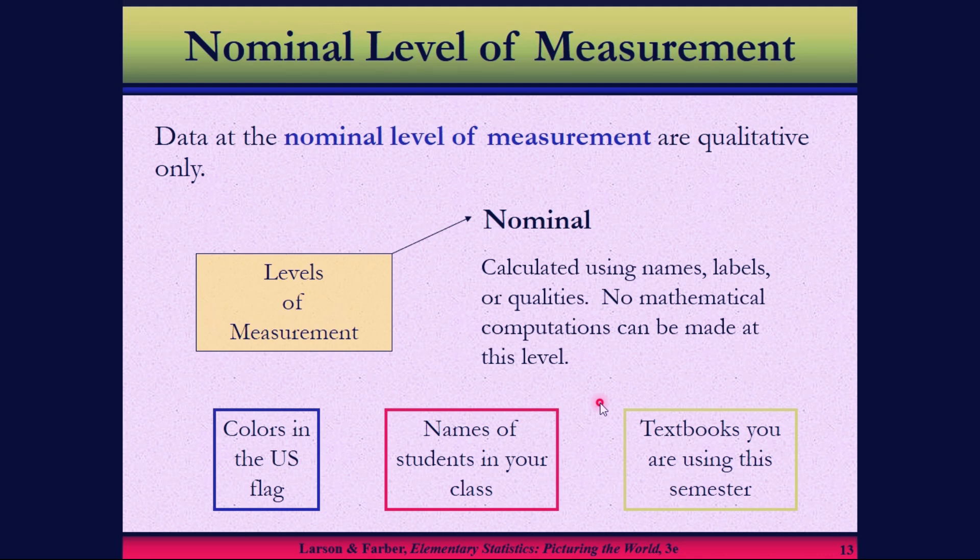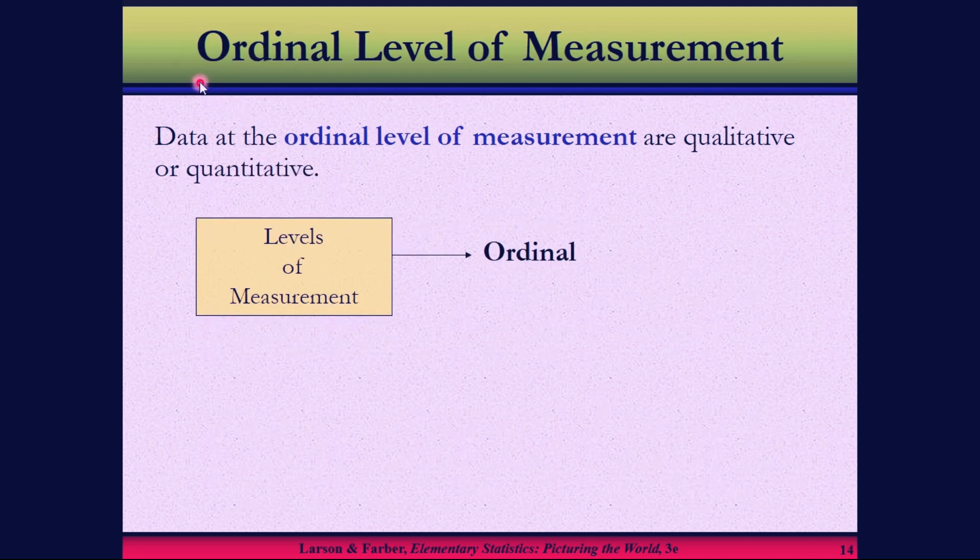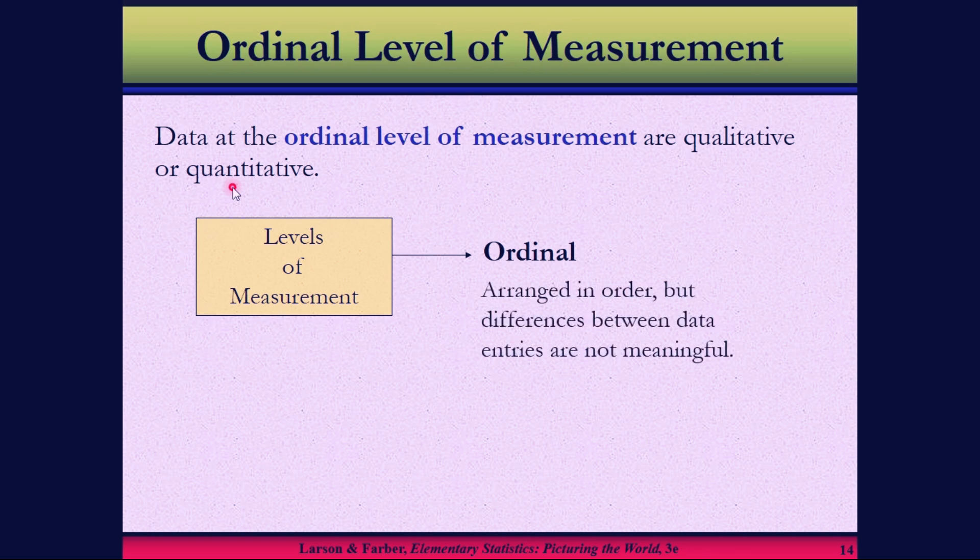The second type of level of measurement is ordinal. We define ordinal level of measurement as data at the ordinal level that are qualitative or quantitative. You can classify qualitative data as ordinal or quantitative data as ordinal.